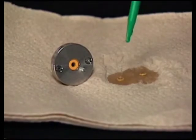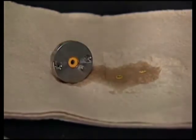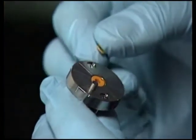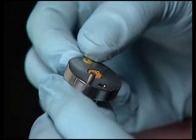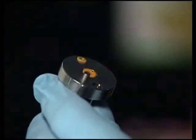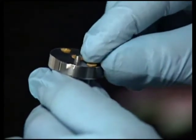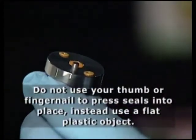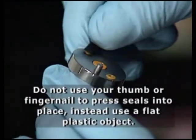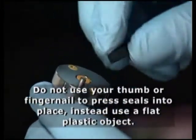Wet the new face seals and the openings in the head thoroughly with methanol. Place the face seals into the openings on the head and press them into place using a flat object that covers the whole area of the seal. Do not use your thumb or fingernail to press the seals into place as they may not sit flush in the head.